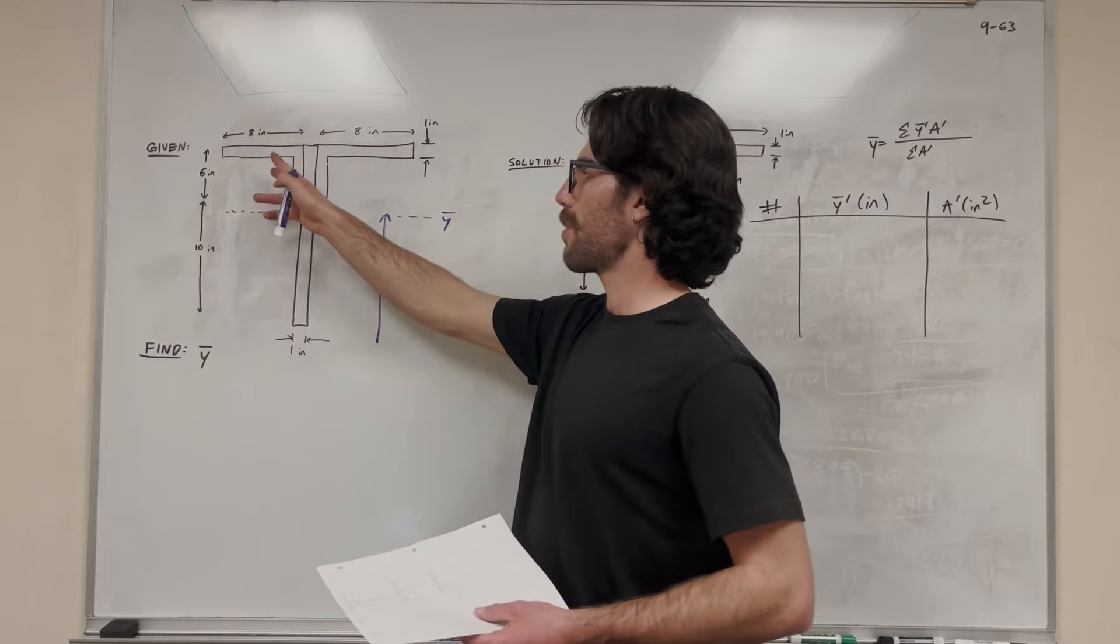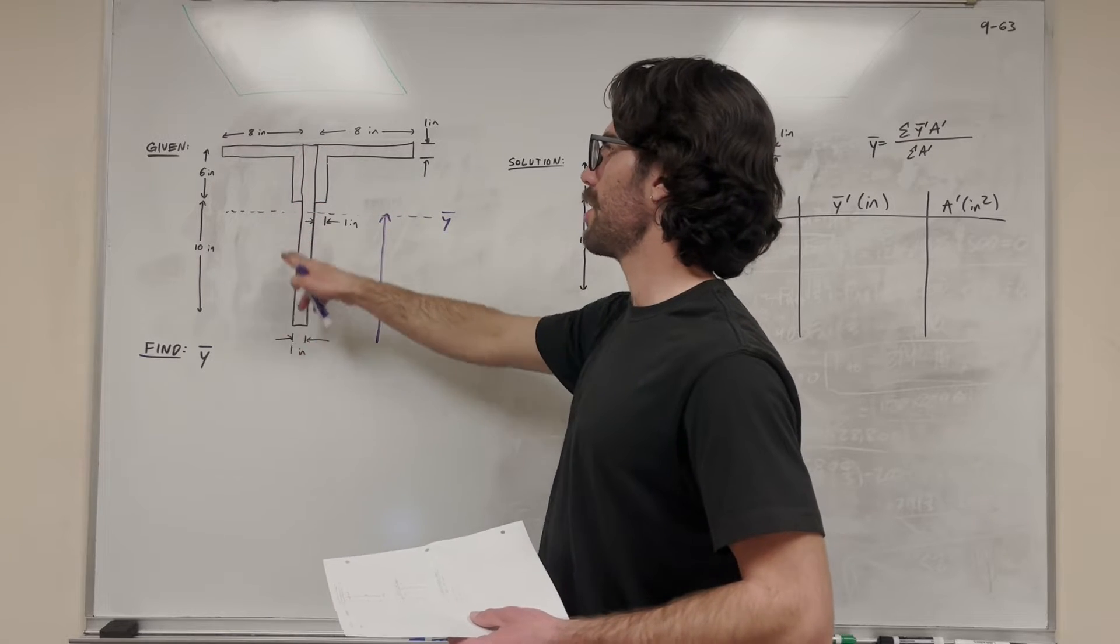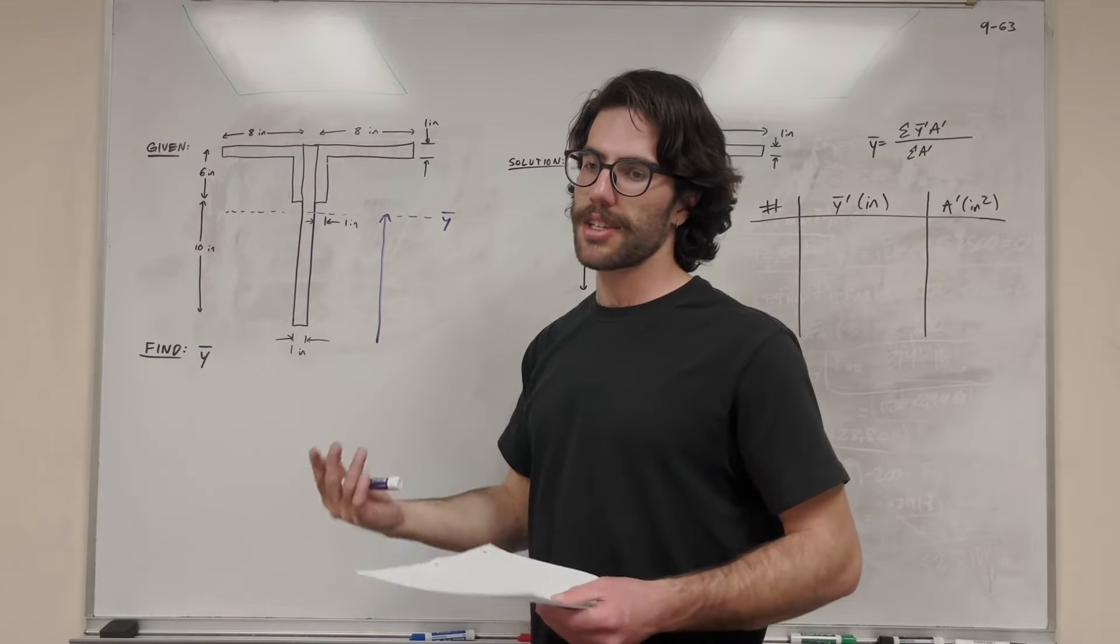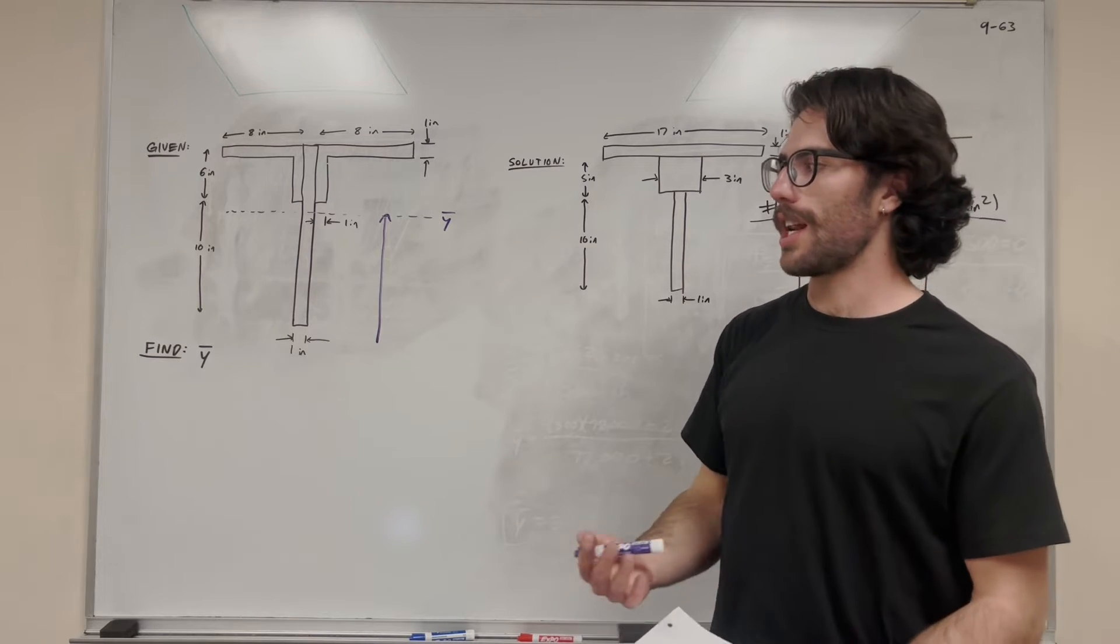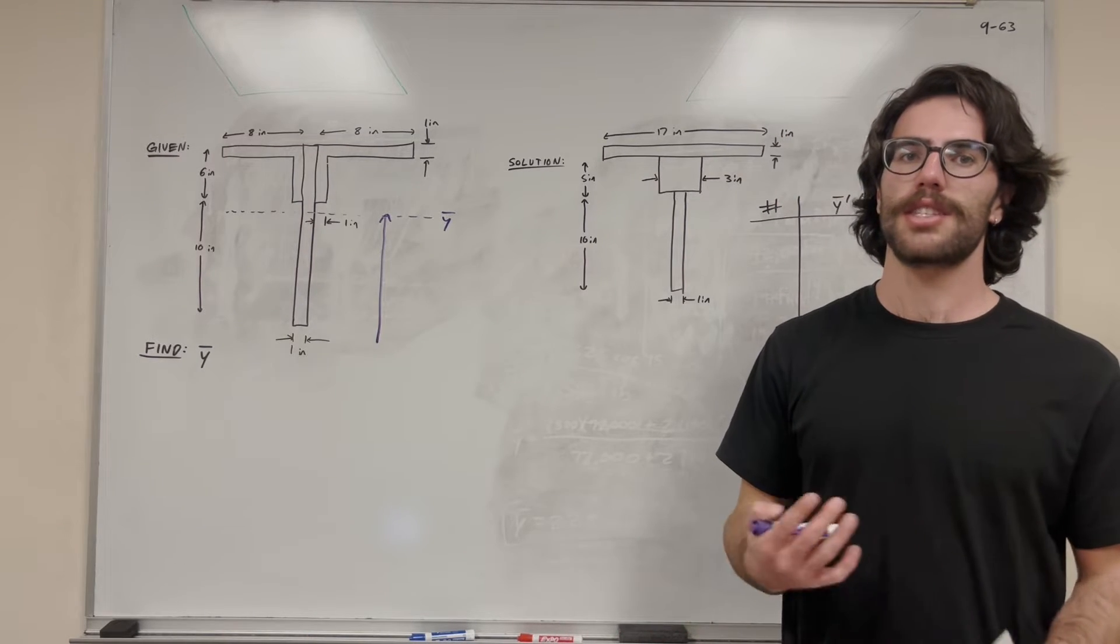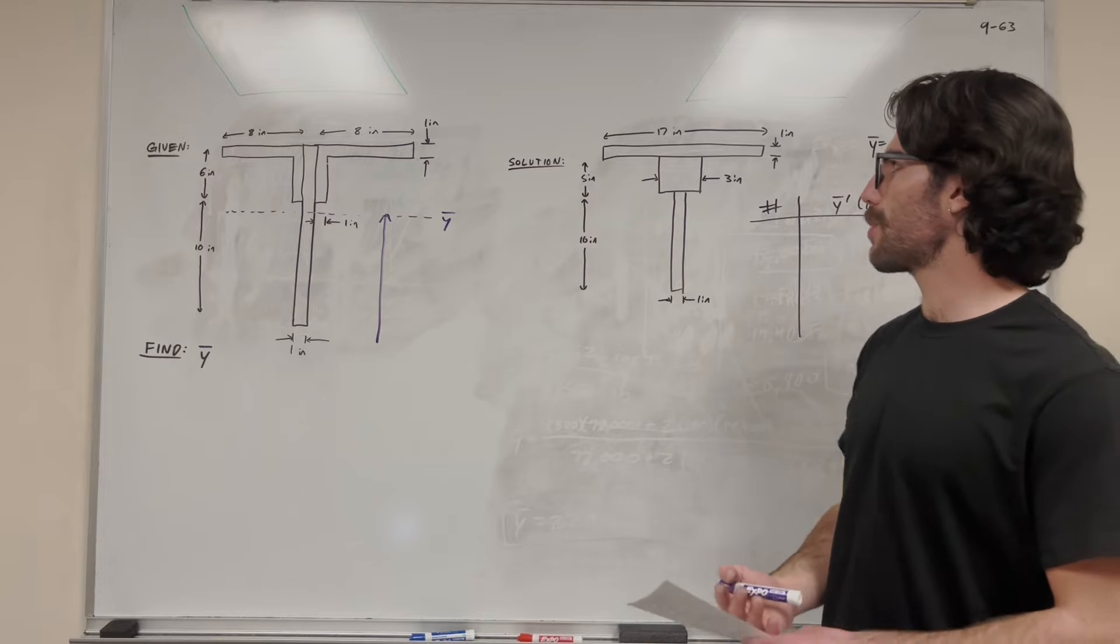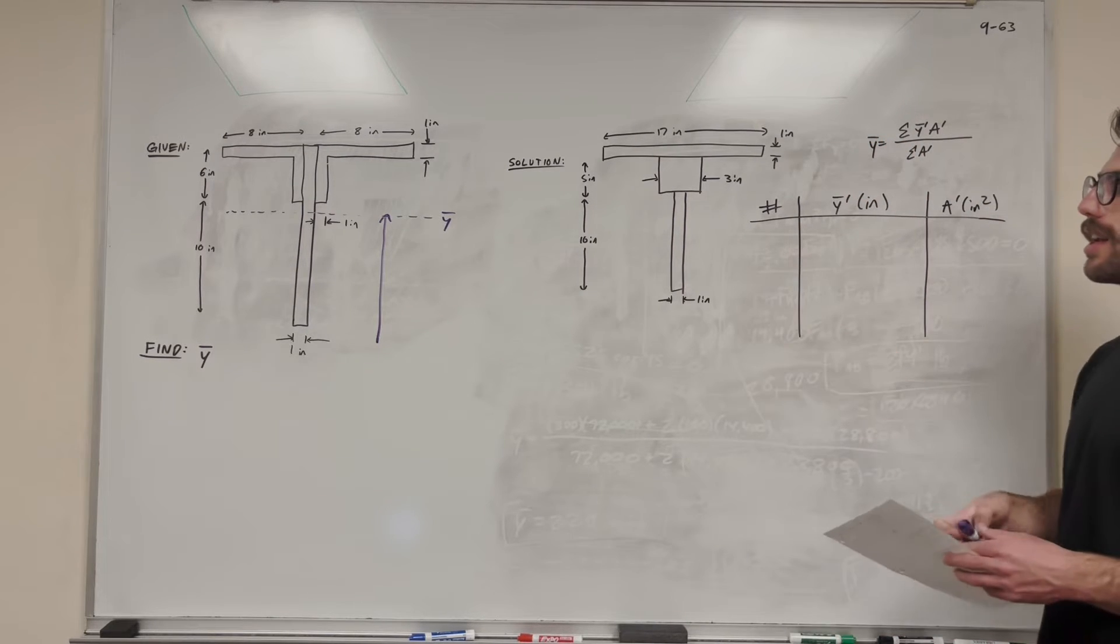So we have this kind of confusing shape here where we see one, two, three big shapes, but these L-shaped things are kind of hard to find the area and the center of mass of. So when we do these kind of center of mass problems, I like to break it up into the simplest shapes possible. And so what I did here is I drew it in a different way, but the most simple way possible.